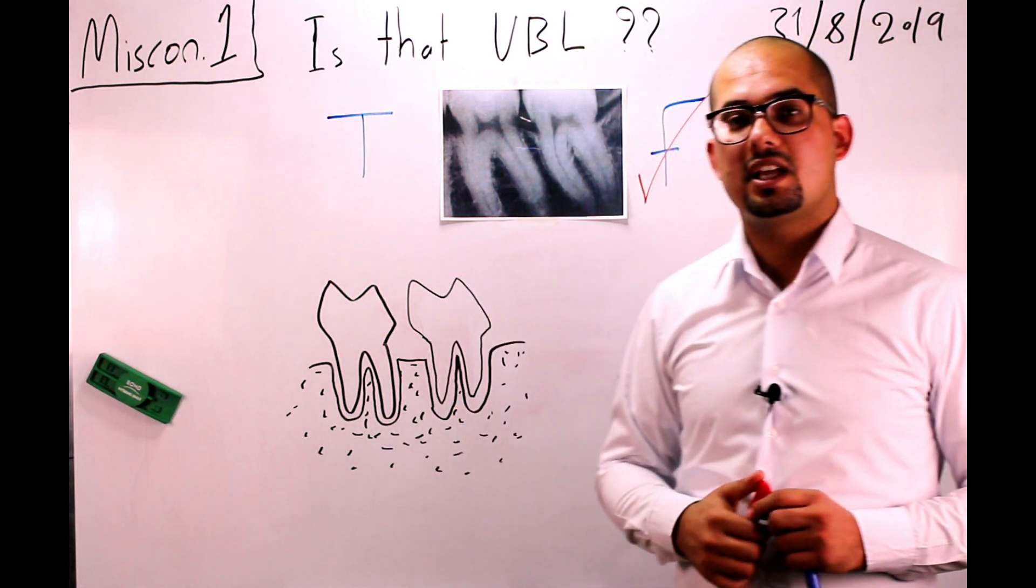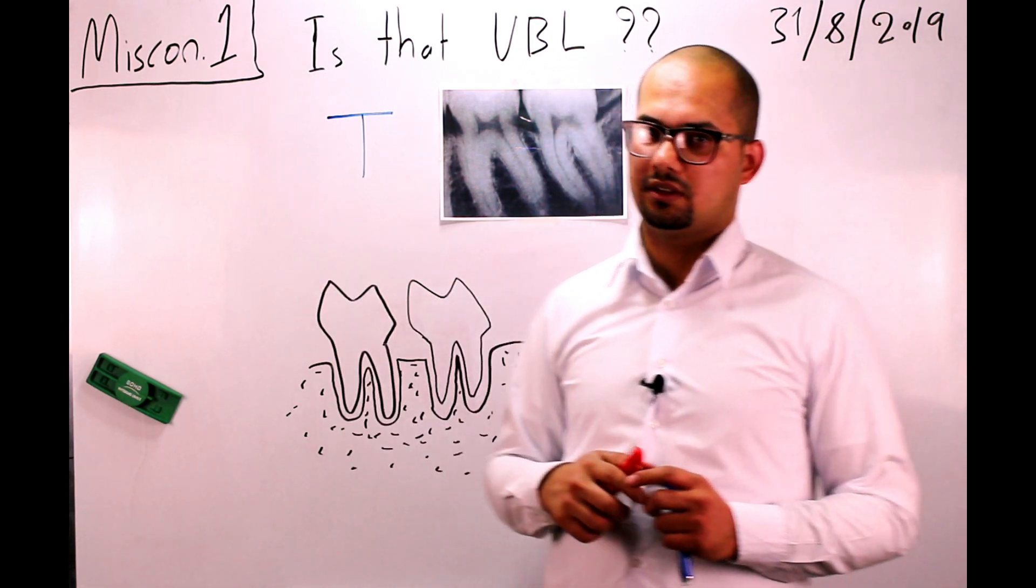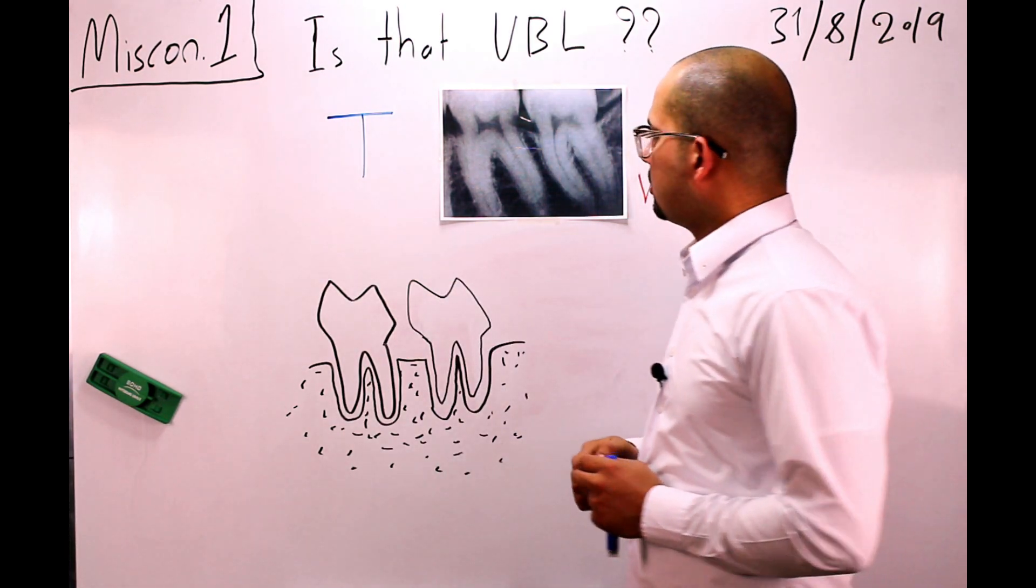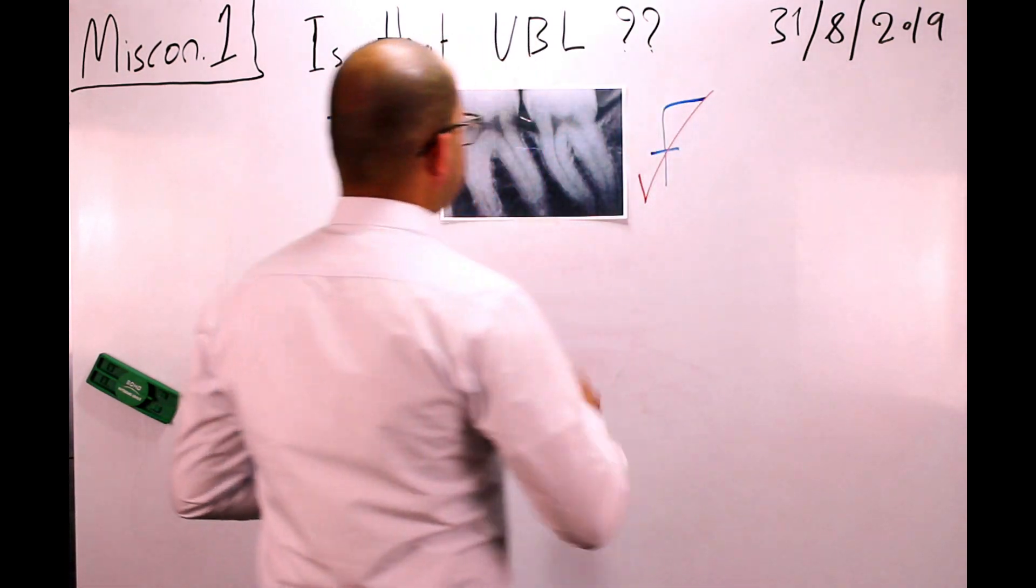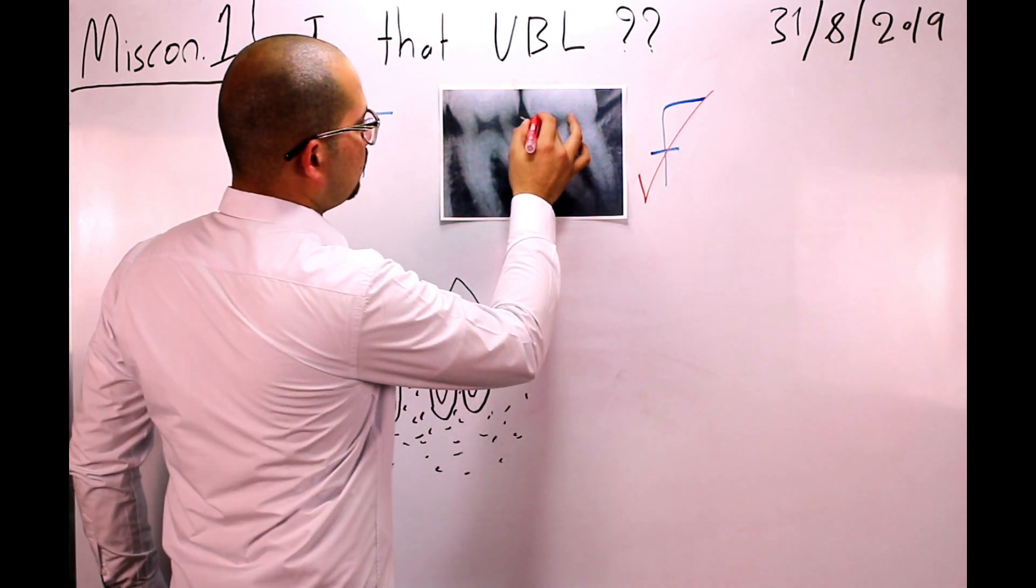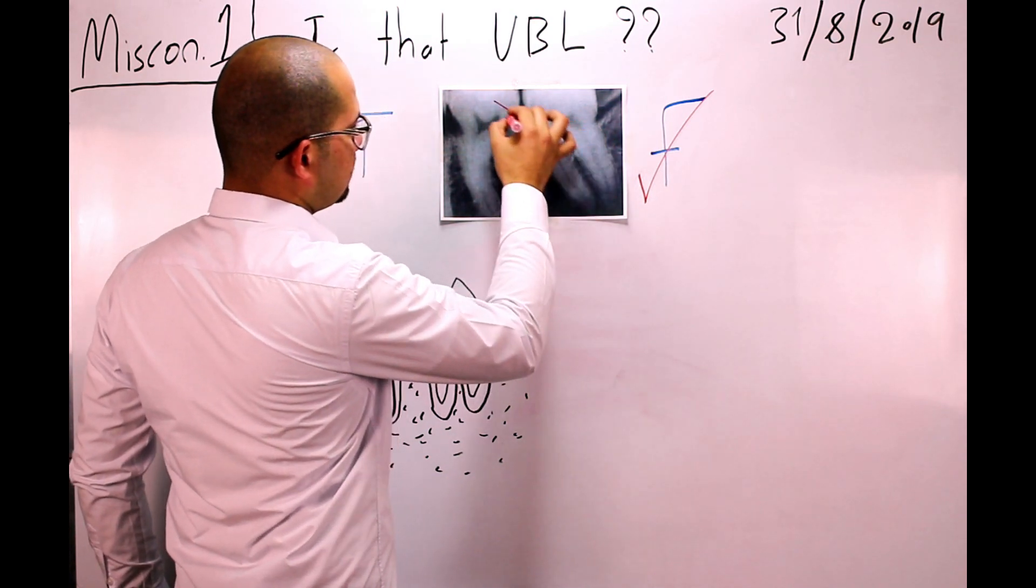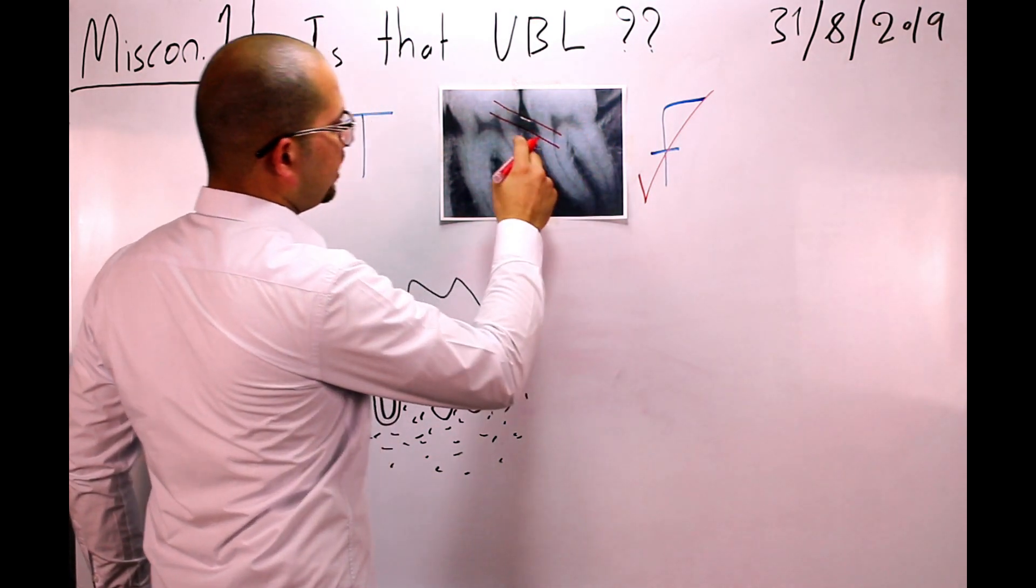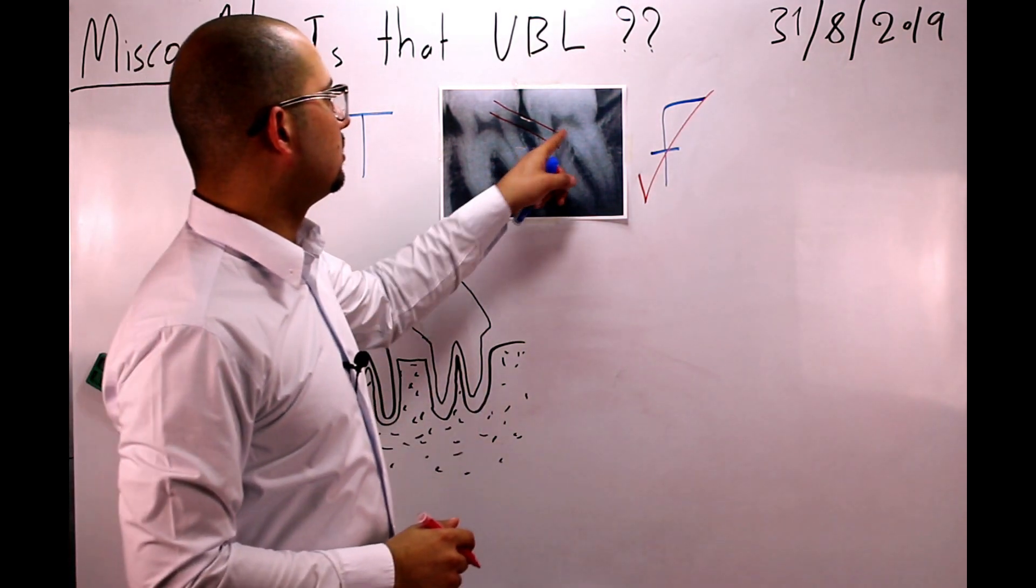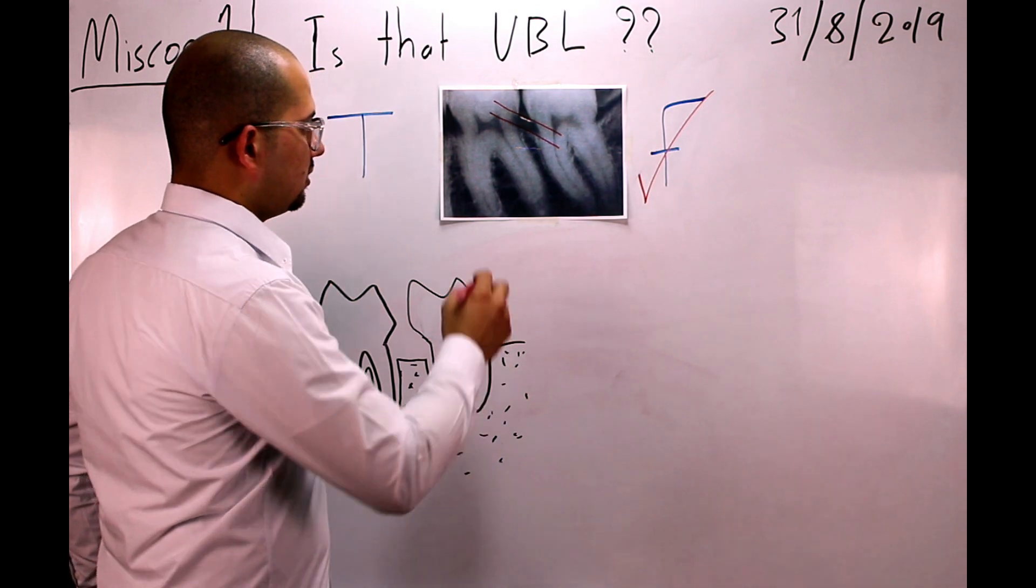Your reference is the cemento enamel junction between adjacent teeth. In this case, if we draw an imaginary line between this one and this one, you will notice the alveolar crest is parallel to that line. So this...